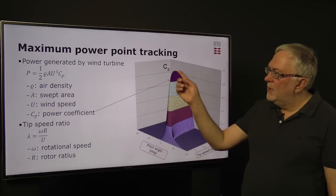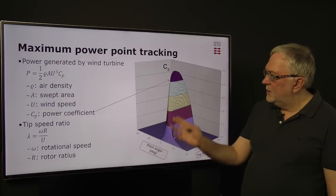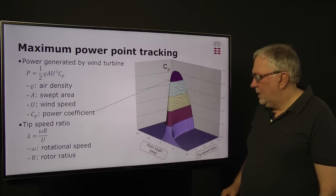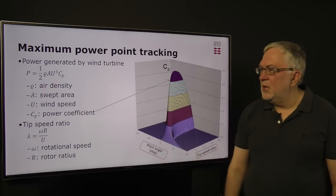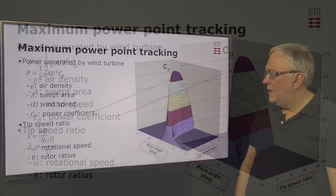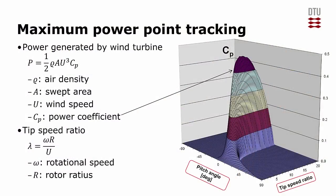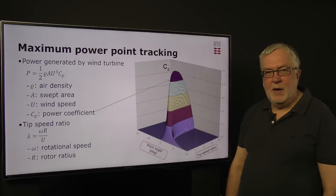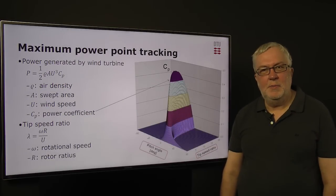Which means that we can keep the pitch angle constant, but we need to change the rotor speed so that it follows the changes that we have in the wind speed. So increasing the wind speed means that we should also increase the rotor speed. That is the target of doing maximum power point tracking: to follow the changes in the wind speed.